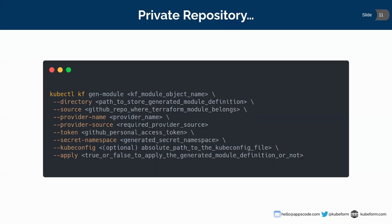These are the commands you can use for generating QFIRM module definitions from public and private git repositories where your Terraform module definition is stored. The generated QFIRM module definitions will be referred to as a module def, which we have seen in our previous video in the module object. So let's see how to generate it from QFIRM CLI.